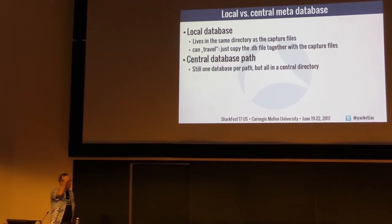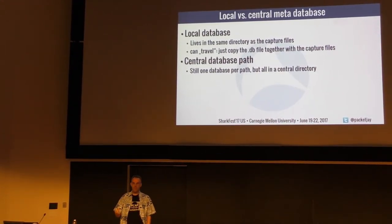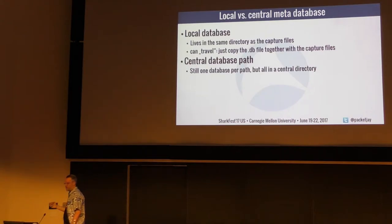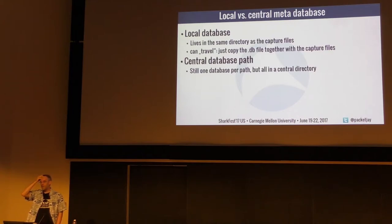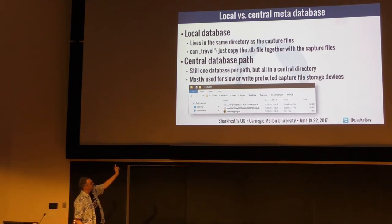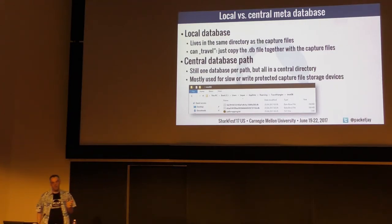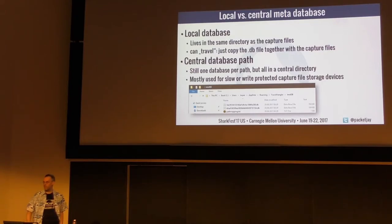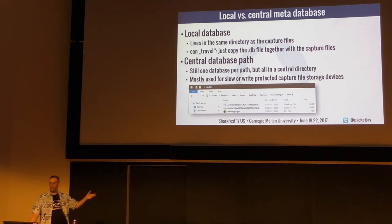For the central database path, each path gets an MD5 sum, and the database file for that path uses the MD5 sum as its filename — so Trace Wrangler knows which database belongs to which path. There's also a pathmapping.txt that maps file names to paths in human-readable form. So you have two options: keep the database alongside the files, or use a central configured path.